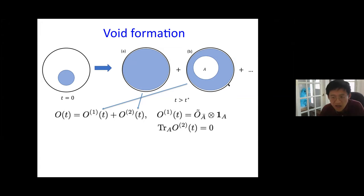I will now show that random void distribution provides the dynamical principle behind approaching typicality. Let me revisit Page's model without assuming typicality, but only assuming the system is chaotic and obeys random void distribution. Suppose at t=0 the system is in some pure state, for example a star. I separate the density operator into the identity part and the part orthogonal to identity (with trace zero). The identity part does not evolve under time evolution.